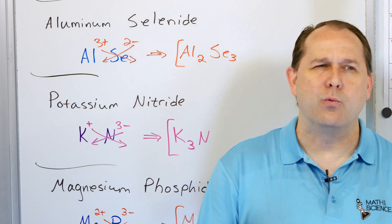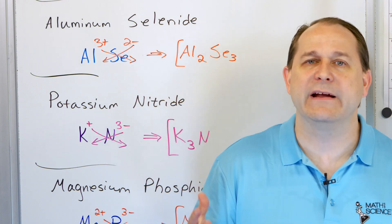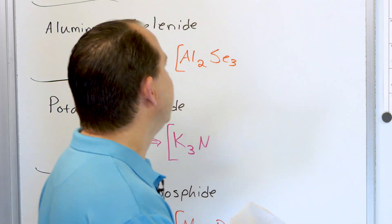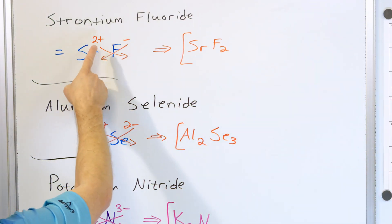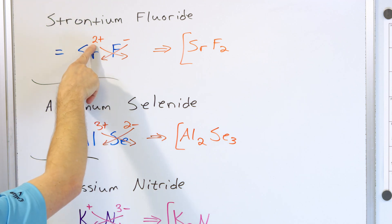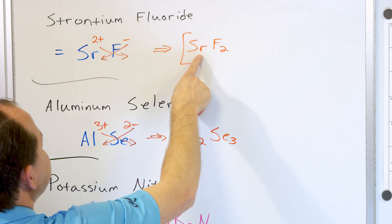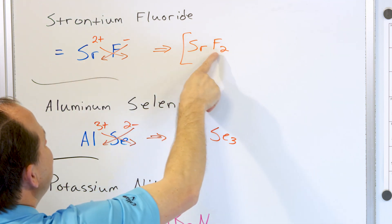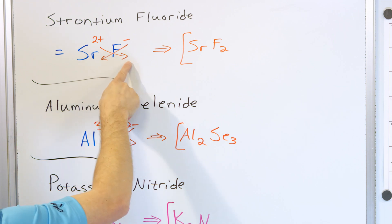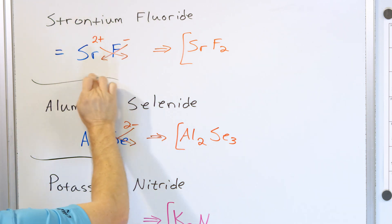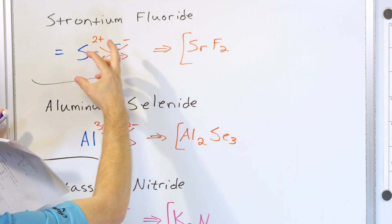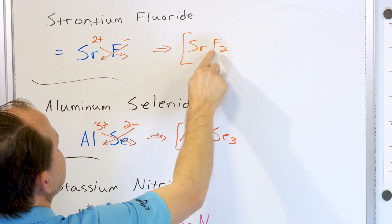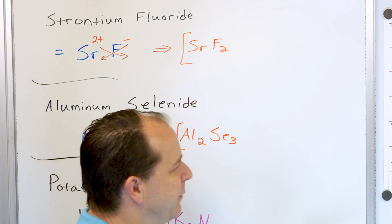Everything forms to try to create a neutral formula unit, not because the atoms have desires, but because the electric force is so strong it pulls things together until neutralized. For strontium fluoride, strontium is plus two and fluorine is negative one. One strontium gives a total of plus two; two fluorines give a total of minus two. So from a distance it all looks like a zero charge, and you get a repeating pattern of one strontium to two fluorine atoms in the formula unit.